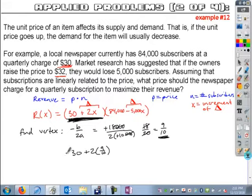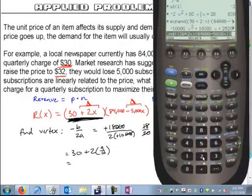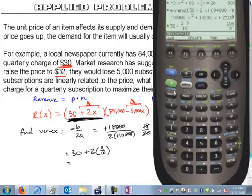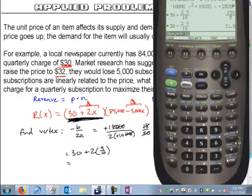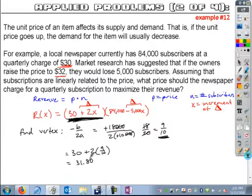What I can do here is I can evaluate 30 plus 2 times 9 tenths, and that's going to be my answer. So if I go into my calculator here and I take 30 plus 2 times 9 tenths, I get, in decimal form because we're dealing with dollars, I get $31.80. So that would be my optimal price to charge. That's going to give me the optimal revenue.